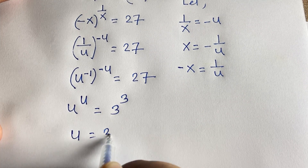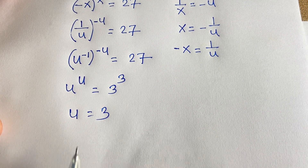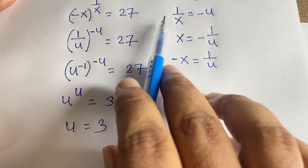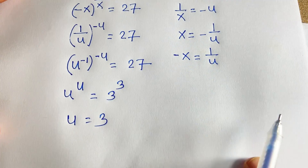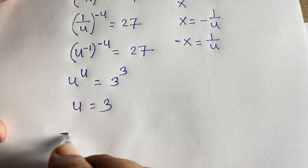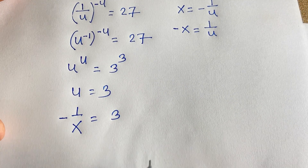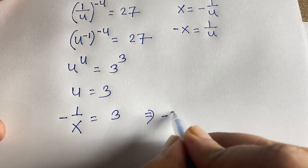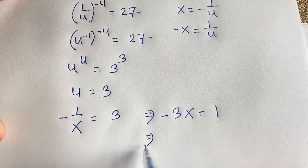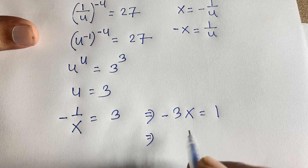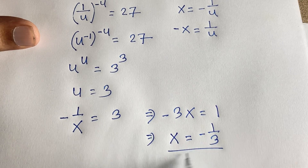Since the bases and exponents match, u = 3. Recalling that u = -1/x, we have -1/x = 3, which gives -3x = 1. Dividing both sides by -3, we find x = -1/3. This is our first answer.